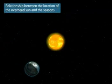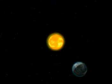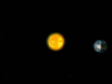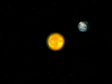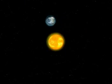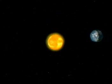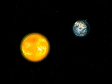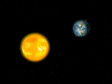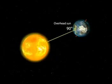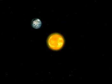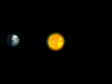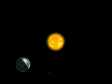The relationship between the location of the overhead sun and the seasons: the revolution of the Earth and the tilting of the axis results in different angles of the sun during different periods. When the sun is directly overhead, we call this the overhead sun. At this time, the Earth's surface and the midday sun form a 90-degree angle. Different locations of the overhead sun result in variations in the amount of solar radiation received in different areas and at different periods.